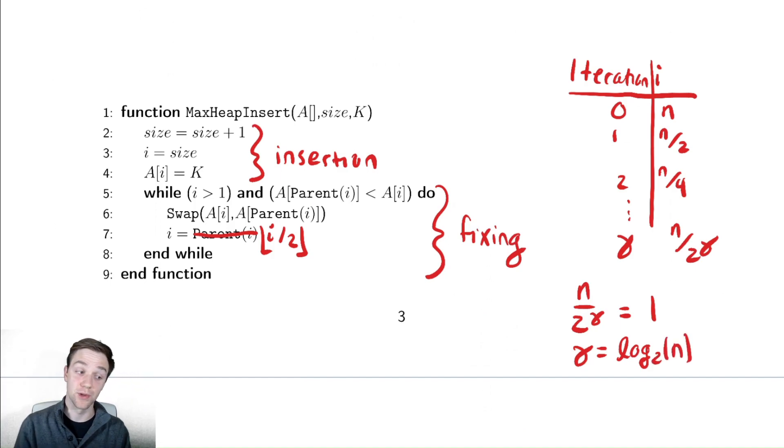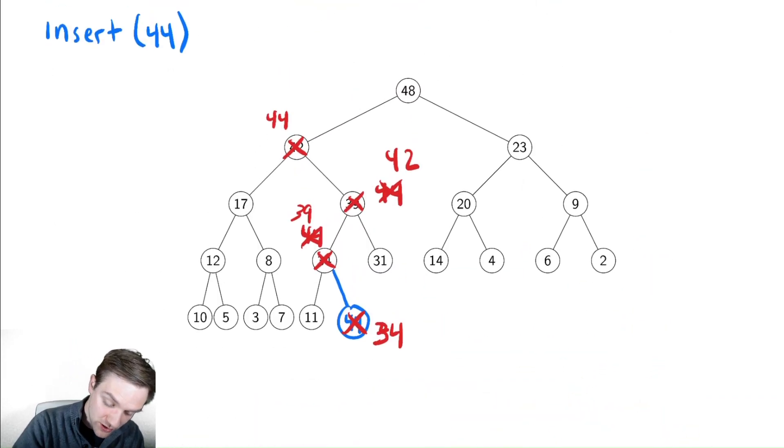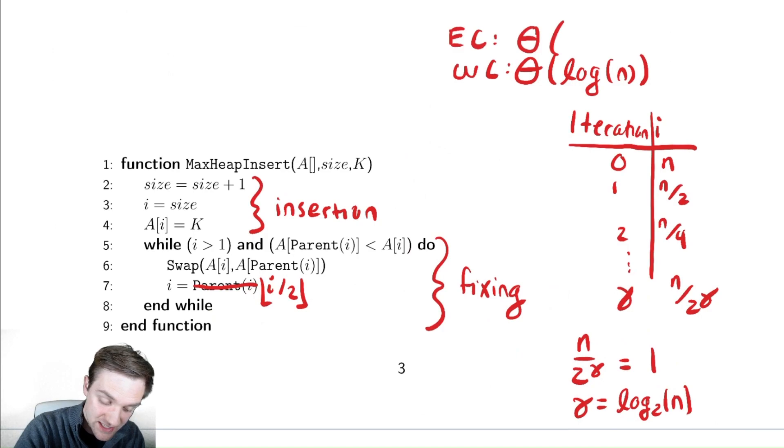So the worst case is in theta of log of n. And it turns out that the expected case is as well. I won't do that derivation here, but I'll give you a justification at least, which is this code should look identical to sorted insert when we analyze that function. This is exactly the same as sorted insert, but all we are doing is performing a sorted insertion along this path. The number of nodes in that path is at most the height. We are performing a sorted insert into an array of size approximately log of n, and the expected case for sorted insert was proportional to the length of the array. So the expected case is also in theta of log of n, the number of elements we at most would need to swap with. If you want to perform that analysis on your own, you could try to replicate the analysis we did with sorted insert, but I'm not going to bother with that here.